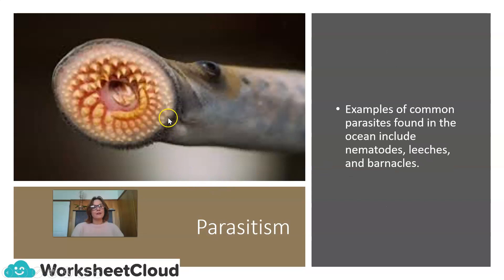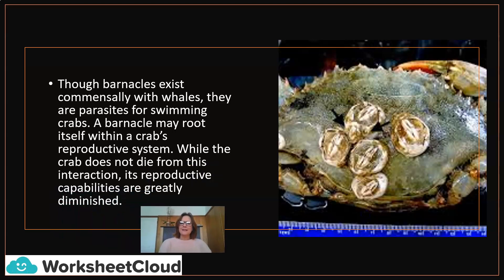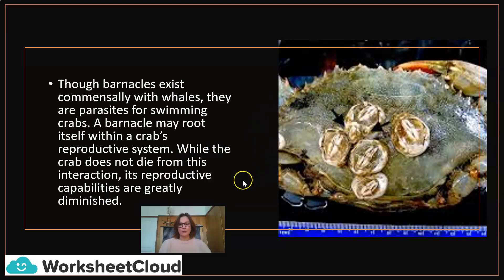Here we have examples of very common parasites found in the ocean: nematodes, leeches, and barnacles. The leech is quite a scary looking creature — take a good look at its mouth and eye. Though barnacles exist commensally with whales, they are parasites for swimming crabs. A barnacle may root itself within a crab's reproductive system. While the crab does not die from this interaction, its reproductive capabilities are greatly diminished. Here you can see the barnacles attaching themselves to the swimming crab.